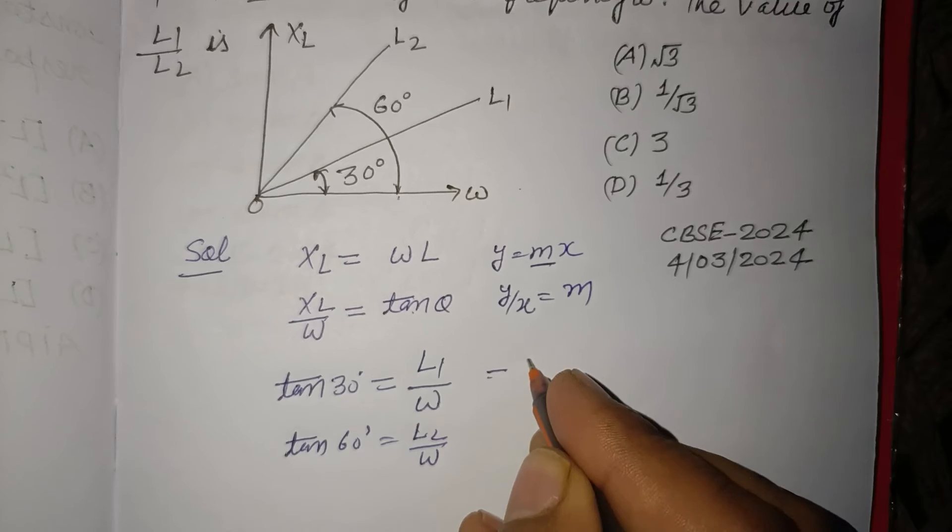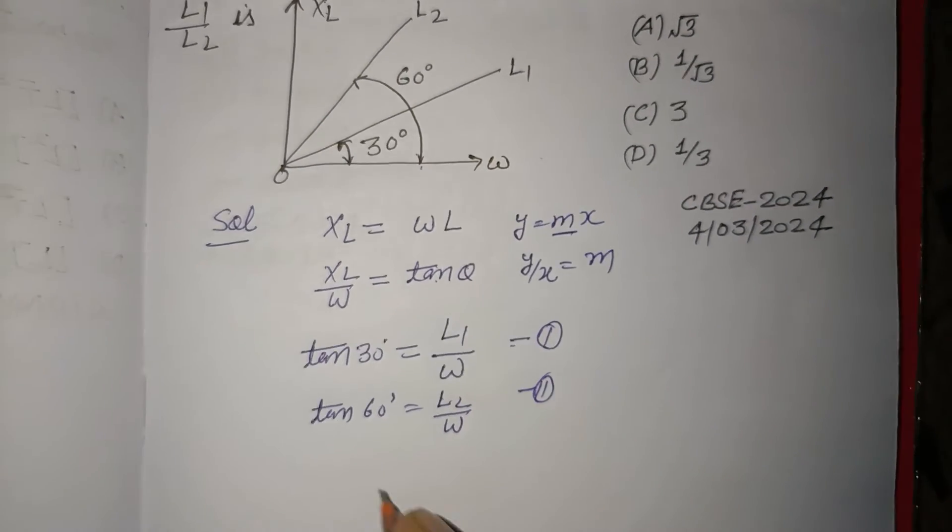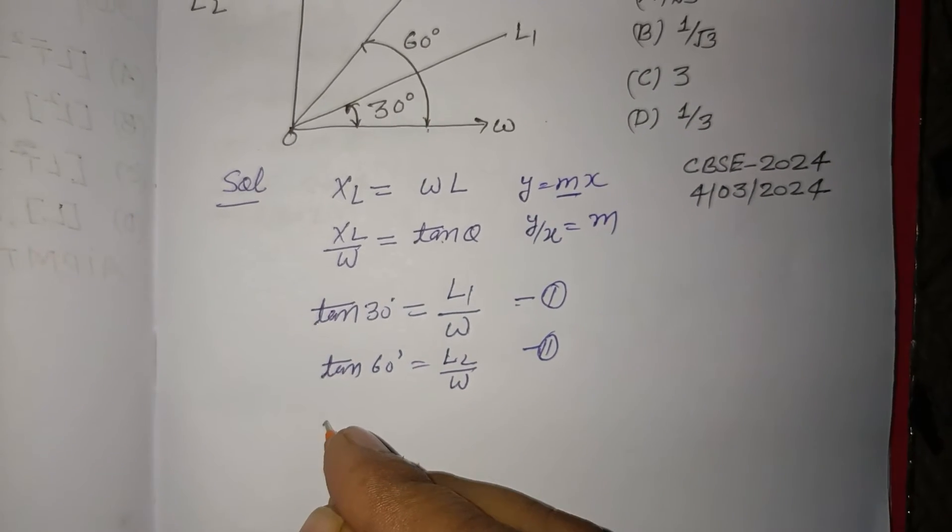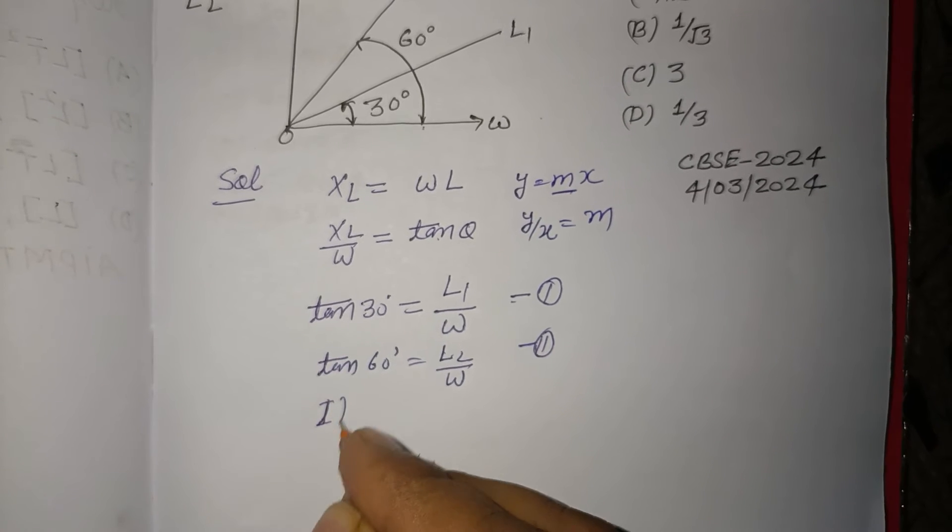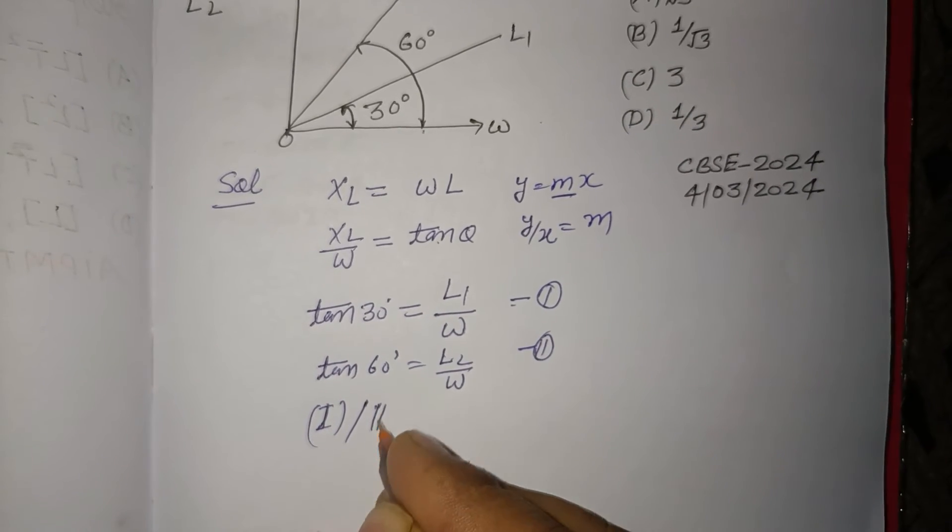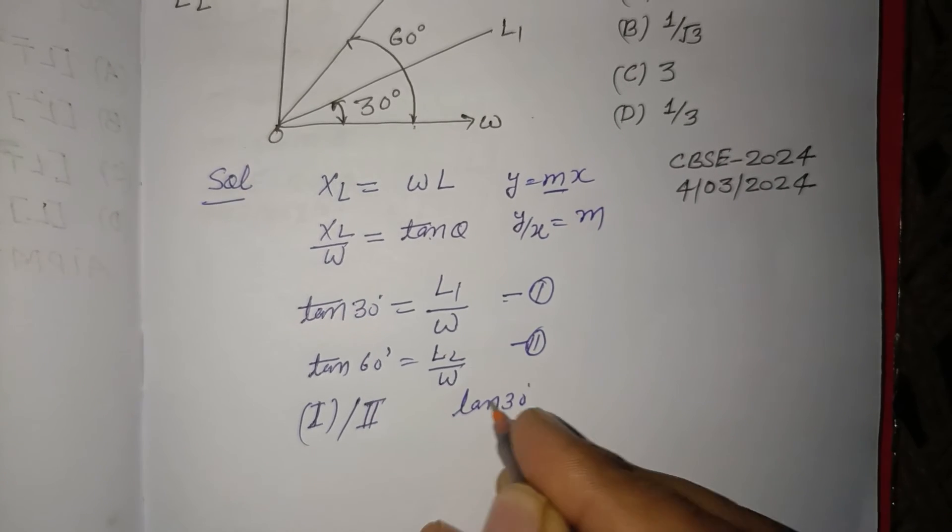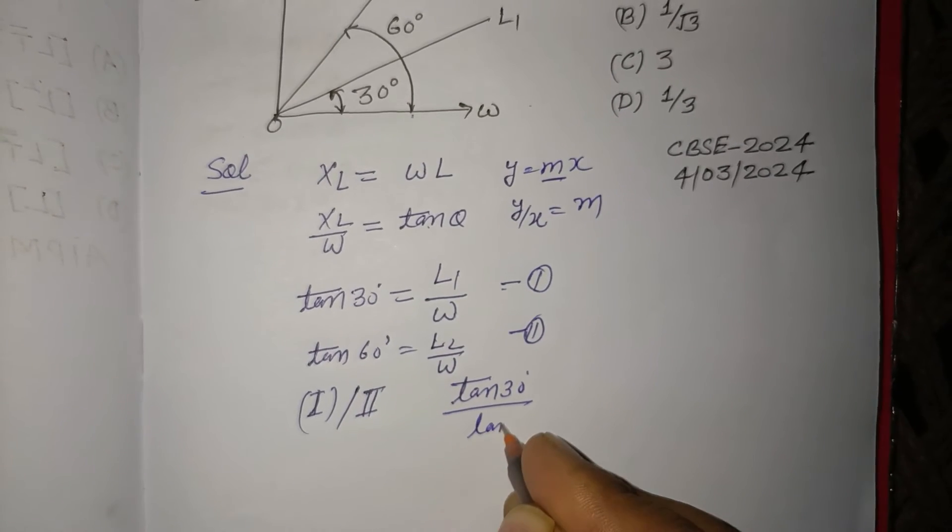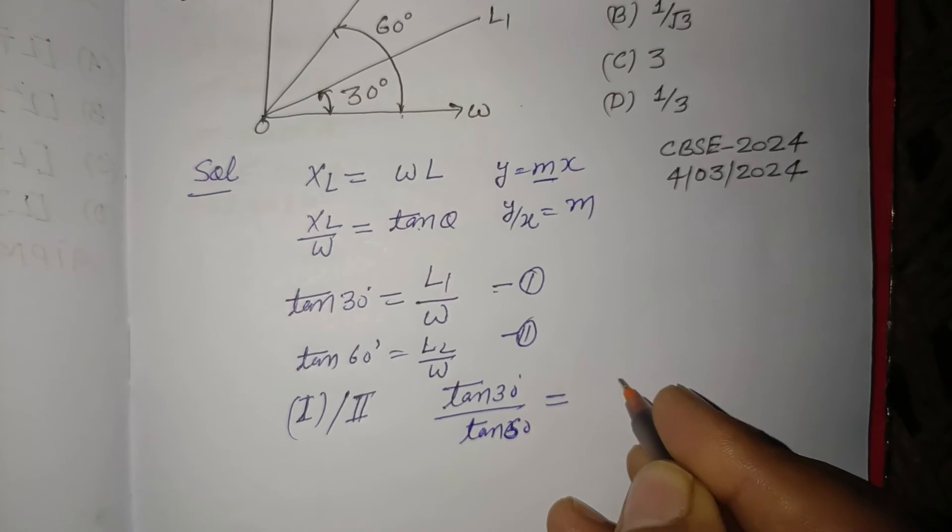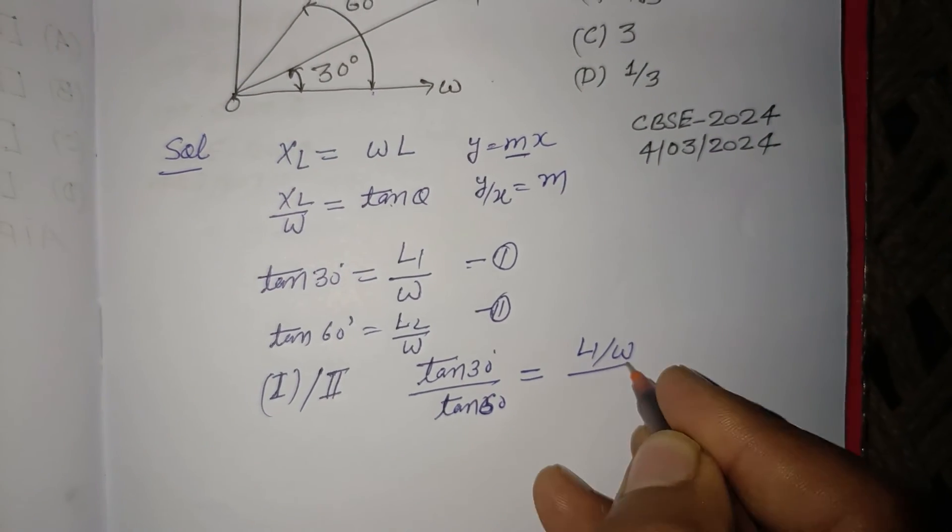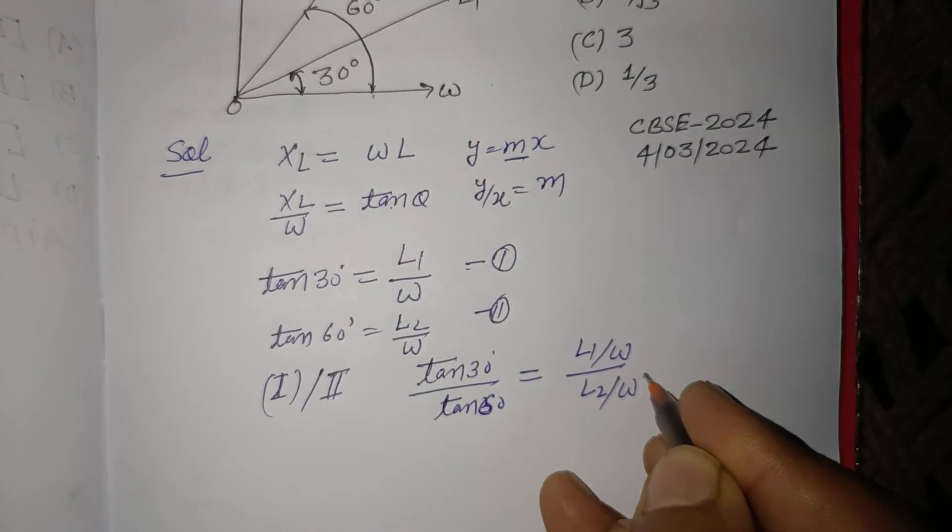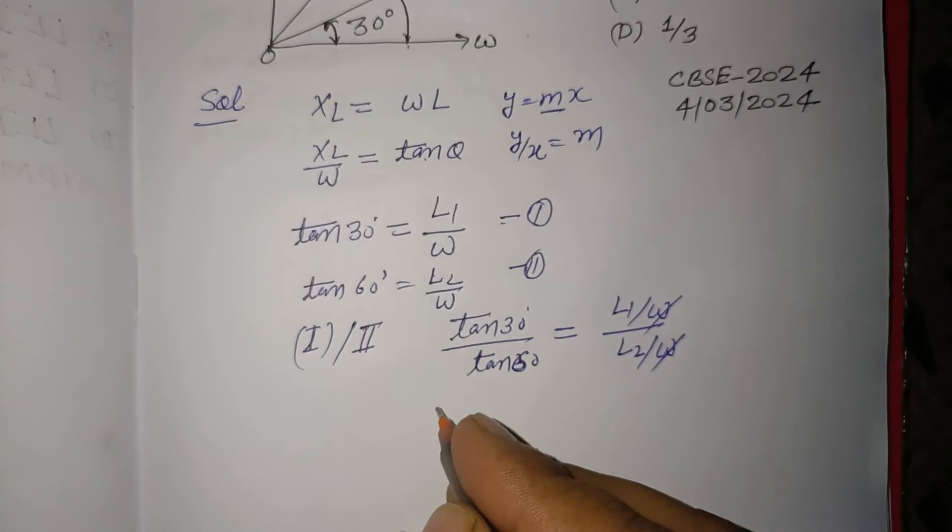Now, dividing first by second: tan 30° over tan 60° equals (L1/ω) over (L2/ω). The ω terms cancel, and we get L1 over L2.